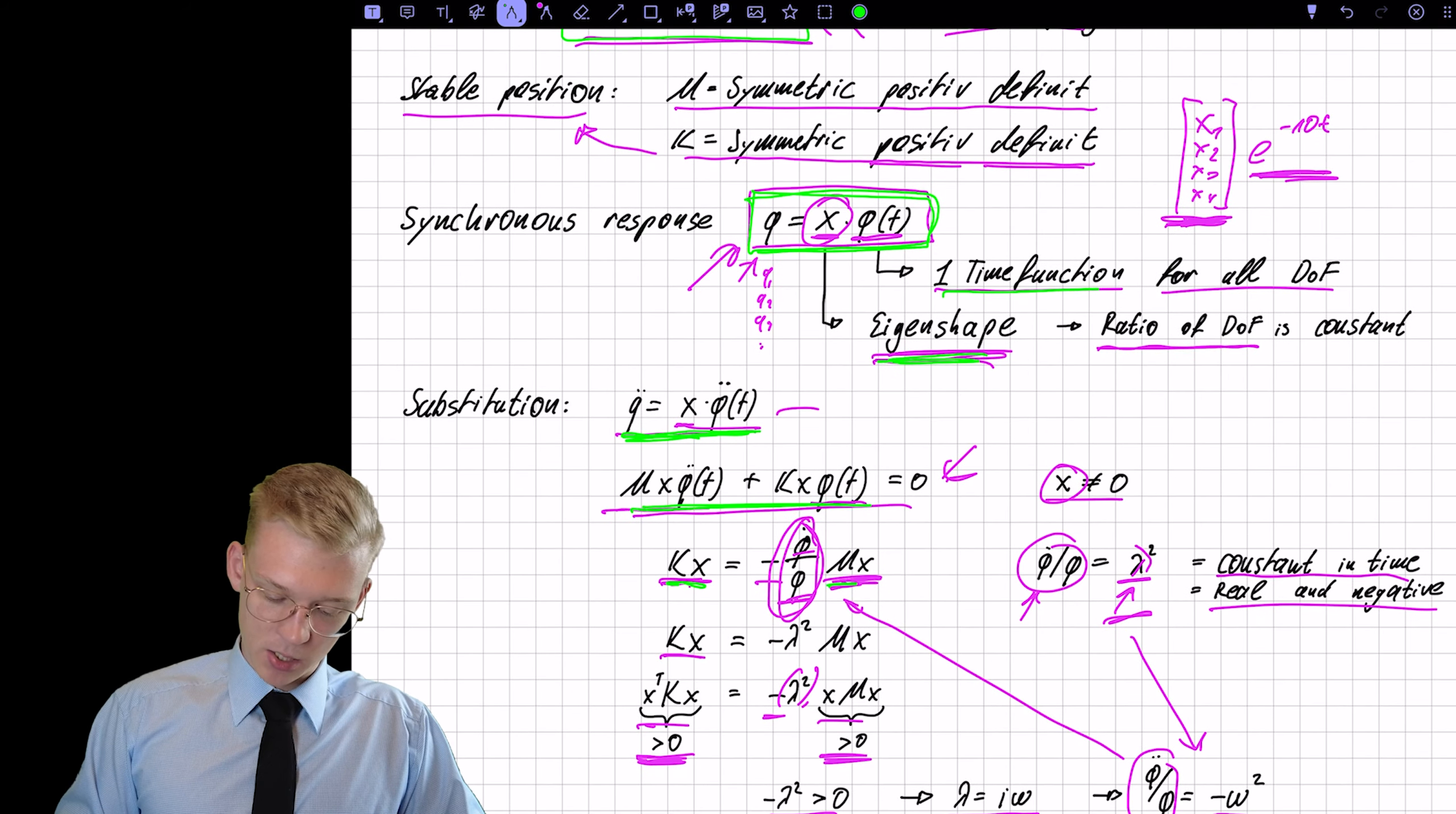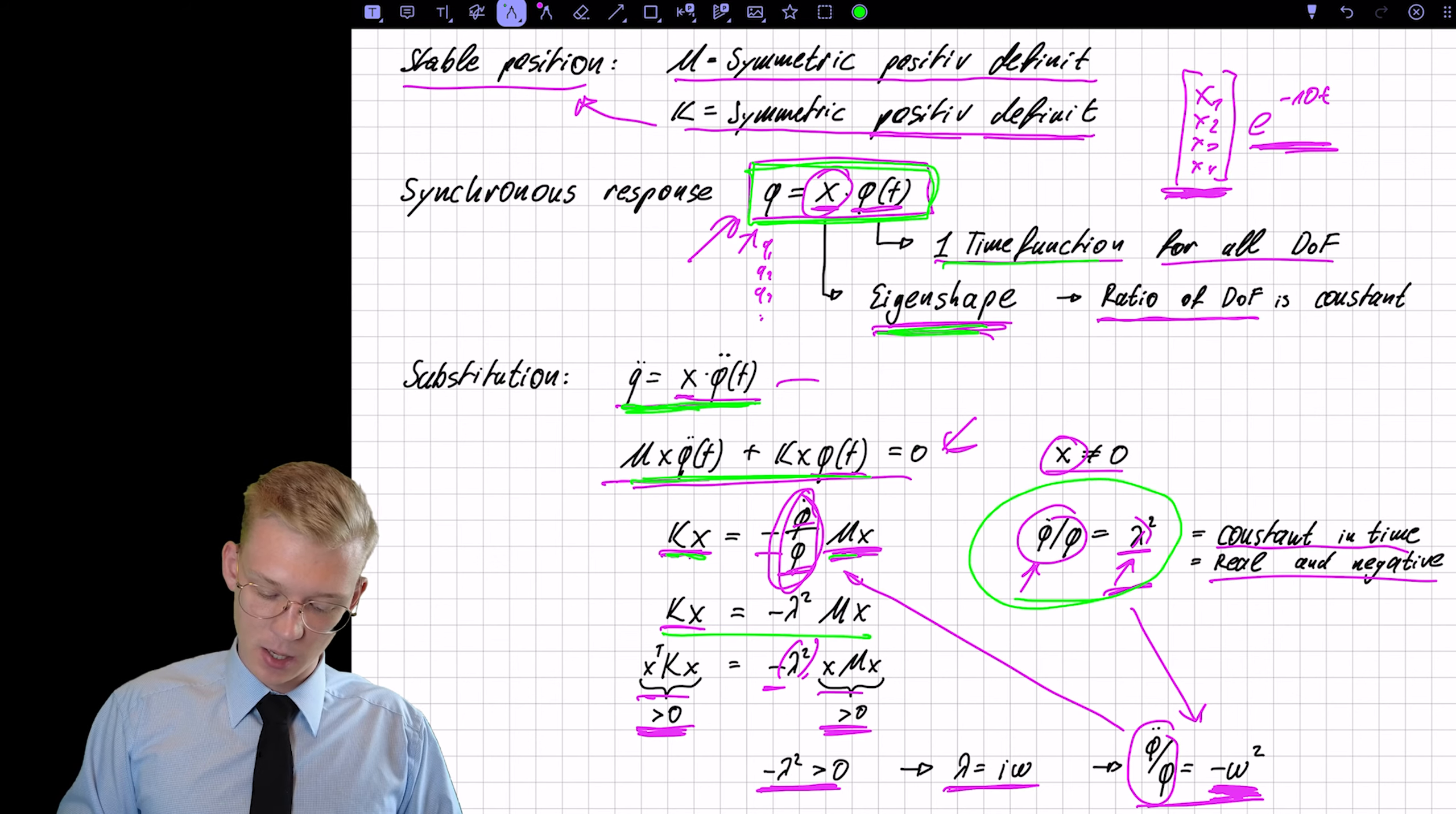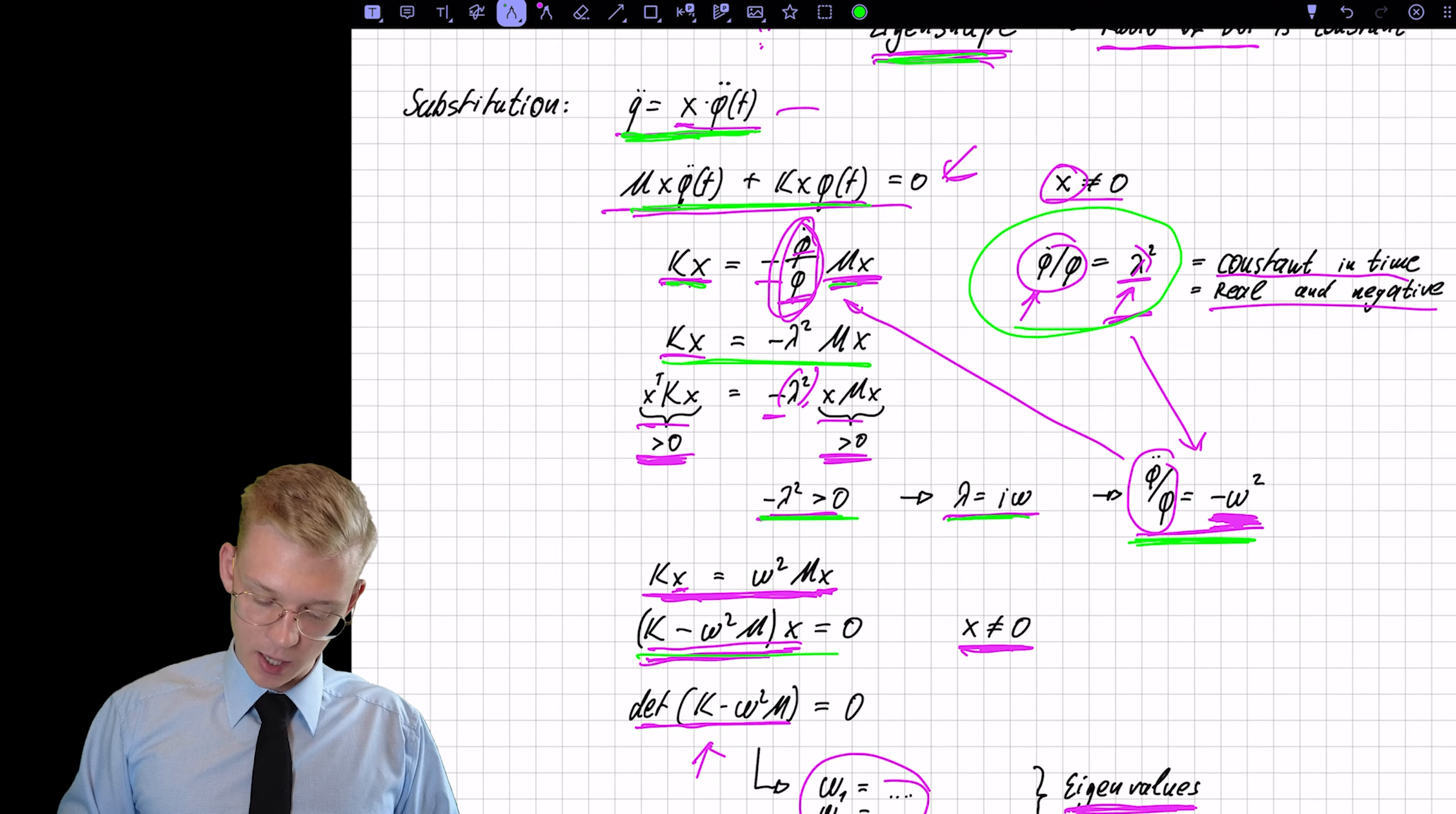We derived that time function twice and inserted into our linearized equations of motion. We did some magic where we shifted, subtracted and divided and we got to the point where we introduced the lambda. We said that the lambda must be, or minus lambda squared must be larger than zero. So it's imaginary. And we introduced that omega, omega squared. By doing so, we got to this very important equation.